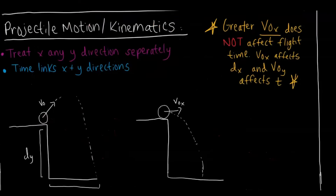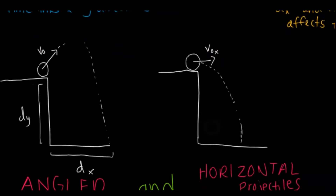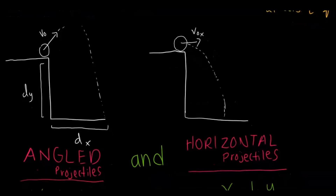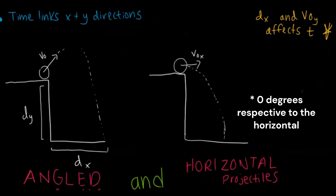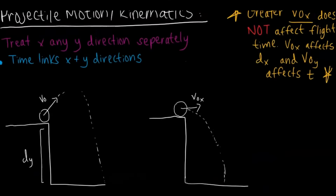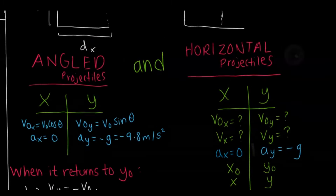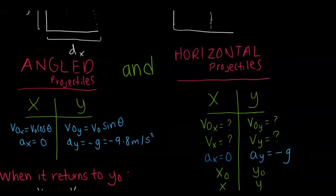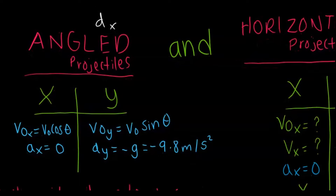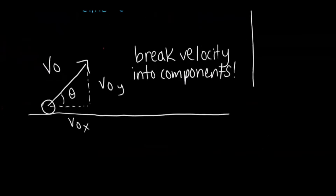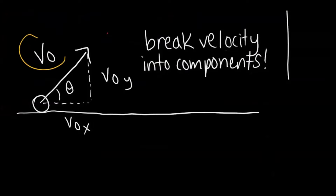The final topic is projectile motion. There are two types of projectiles: angled projectiles and horizontal projectiles. When it's angled, it's launched at an angle into the air. When it's horizontal, it's launched flat — at 90 degrees — given an initial velocity that acts in the X direction. For angled projectiles, you break that initial velocity into its components using trig, just like we discussed before. Once you get those values, there are a couple of ways to analyze it.